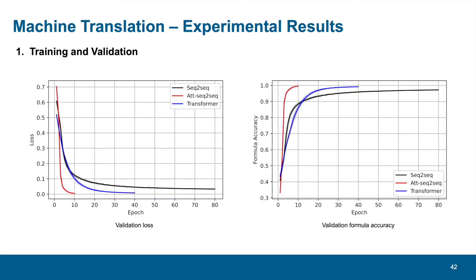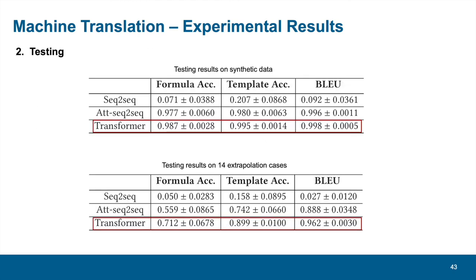This slide shows the validation loss and accuracy in training. All three models can converge at last with different speeds. For testing, we firstly tested the three models on synthetic data. The accuracies of seq-to-seq are very low. However, for attention seq-to-seq and transformer, their accuracies are pretty high, with transformer performing a little bit better. However, when we did extrapolation tests on 14 English requirements collected, the translation accuracies of all models dropped considerably. Despite the loss of performance, we can see Transformer still does the best job.